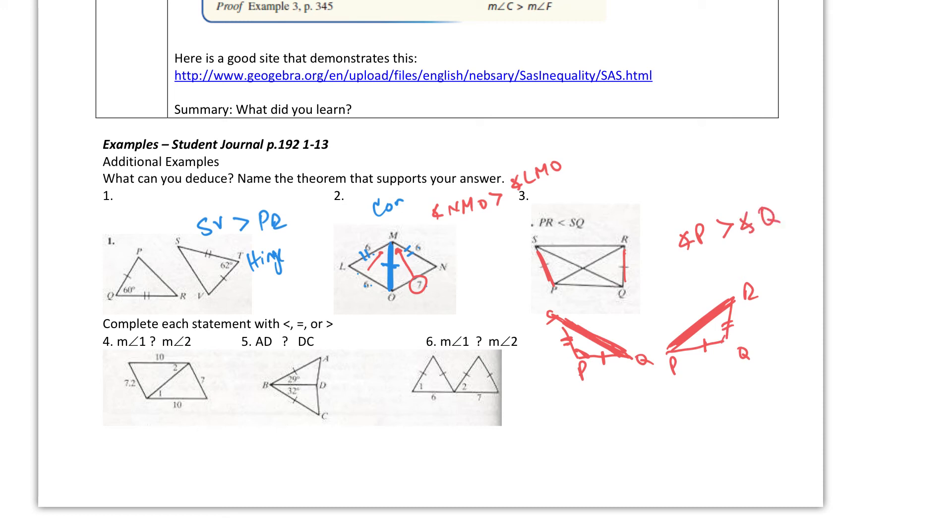Okay, moving on, let's finish these off. Compare each one over here on this first one, the measure of angle 1 and the measure of angle 2. Well this is 10, that's 10, and since they both share this side, this is 7.2, that's 7, so that means angle 2 is going to be larger.